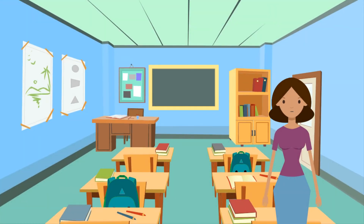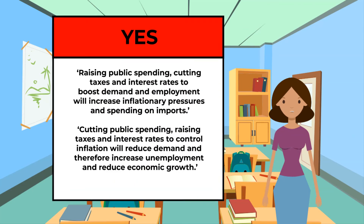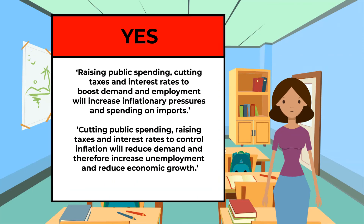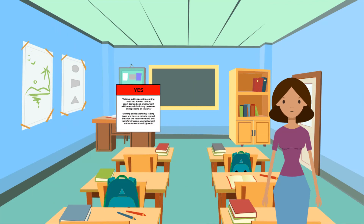Sometimes policy objectives can conflict. For example, raising public spending, cutting taxes and interest rates to boost demand and employment will increase inflationary pressures and spending on imports. Conversely, cutting public spending, raising taxes and interest rates to control inflation will reduce demand and therefore increase unemployment and reduce economic growth.